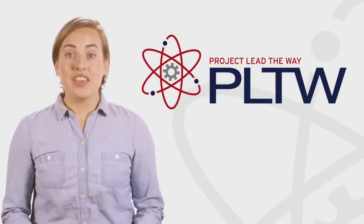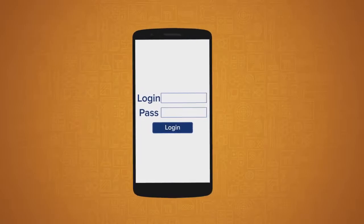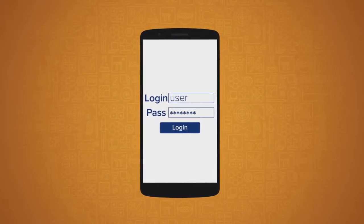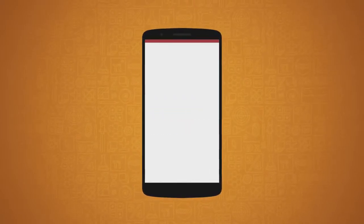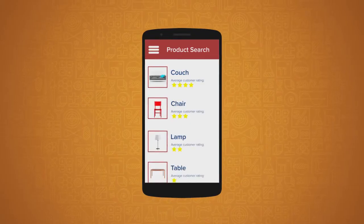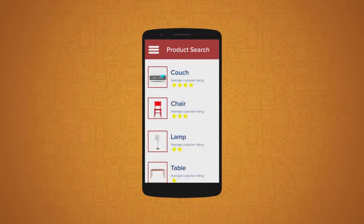For example, think about all the features of a mobile app. Each one of those features requires careful thought using clearly defined steps to create it. Even simple apps can have hundreds of steps to make them function correctly.